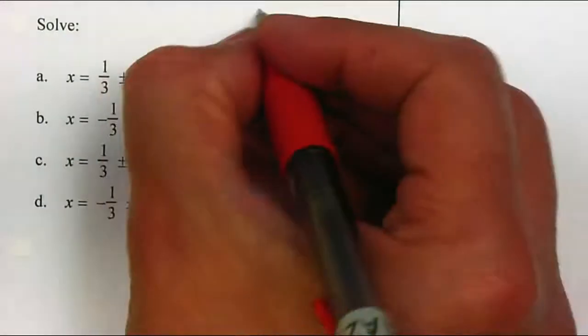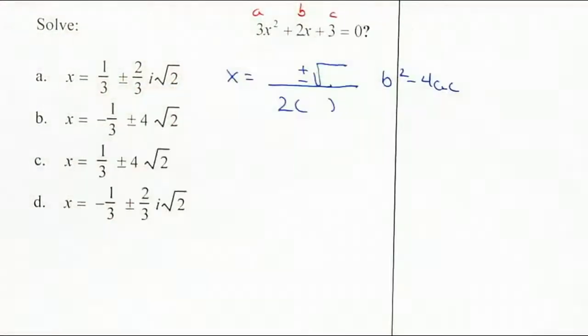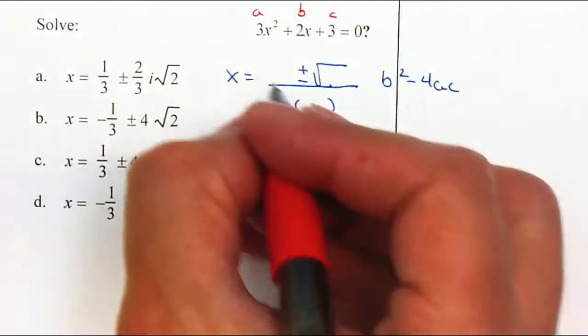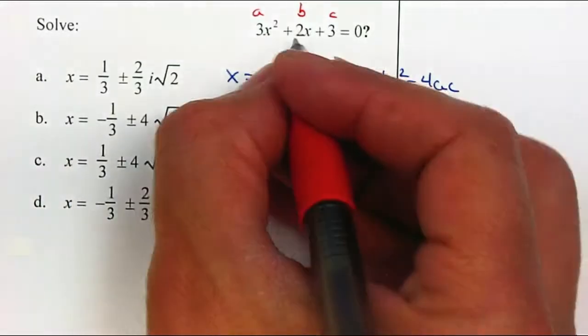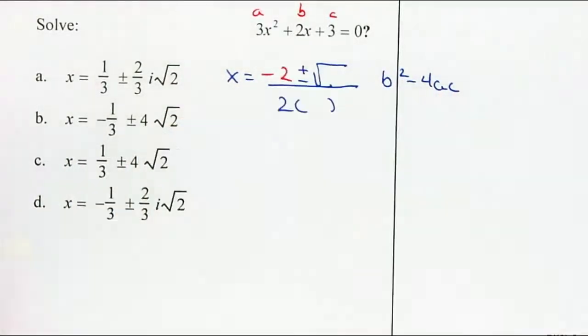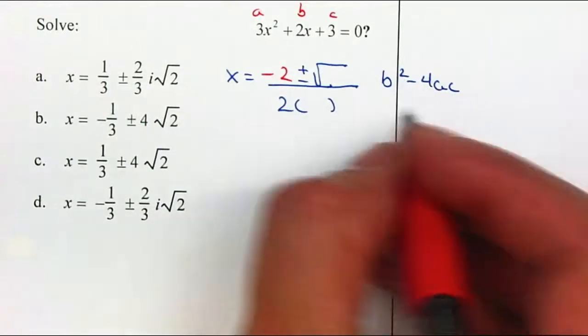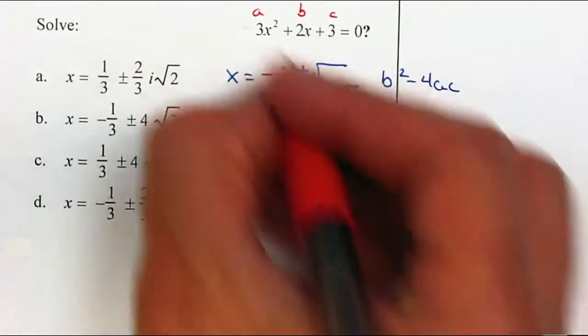This will be the value of a, the value of b, and the value of c. Let's see, x equals opposite b, so I said 2, so this will be a negative 2, plus or minus square root of b squared minus 4ac, all over 2a. This is a 3.